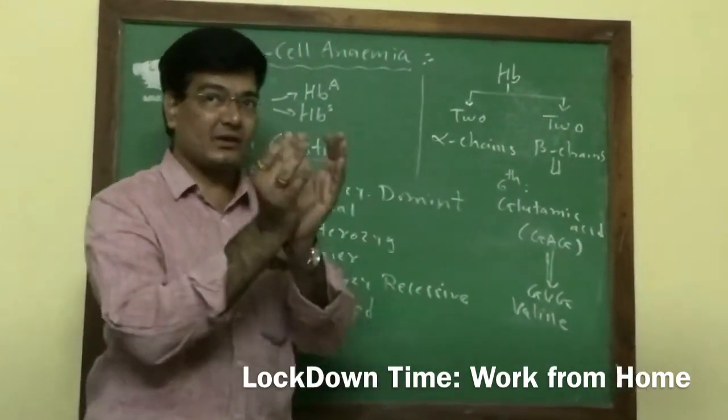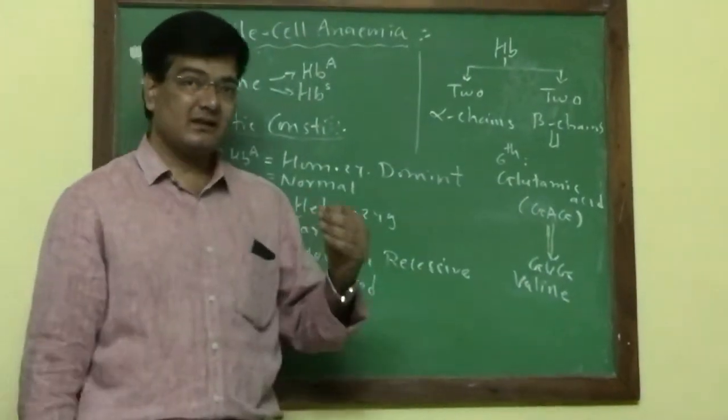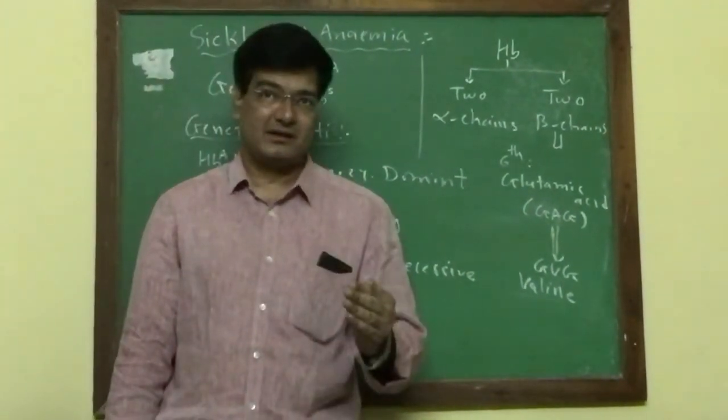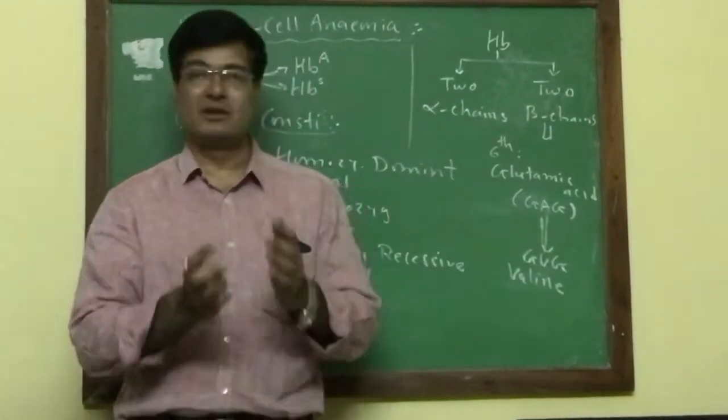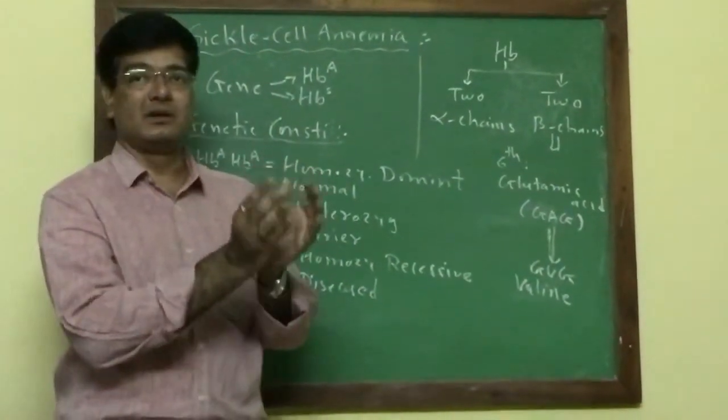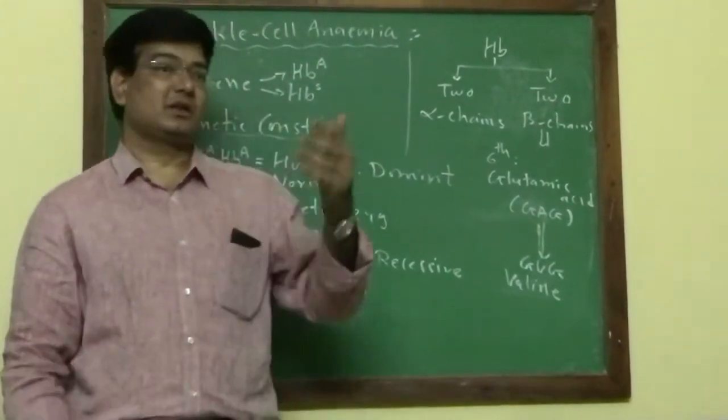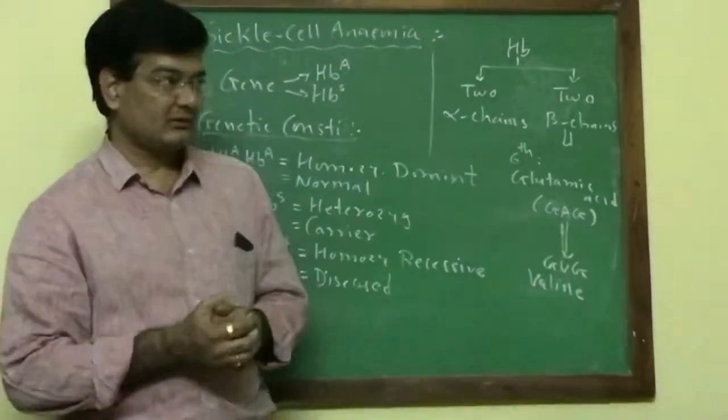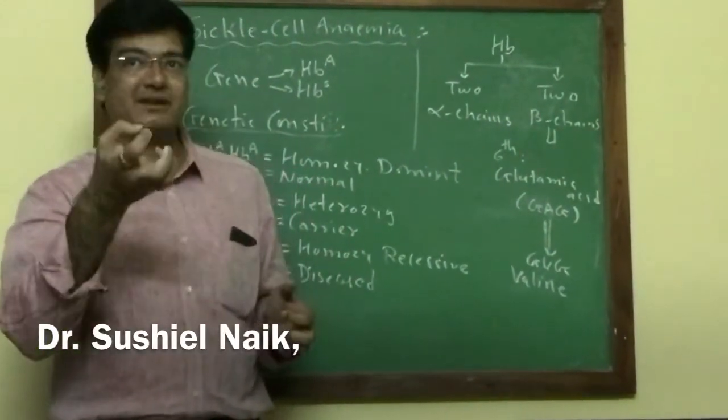This beta chain is wrongly synthesized and the entire hemoglobin molecule is wrong in constitution. The quality of the hemoglobin varies, and that's why it is a qualitative disease. In this condition, hemoglobin cannot absorb or retain oxygen.